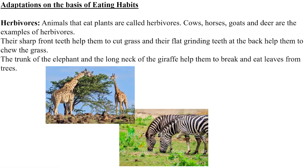The next adaptation is based on eating habits. Herbivorous animals have very sharp front teeth which help them cut parts of plants, and large flat back teeth — premolars and molars — which help them grind their food. Animals like the elephant have a long trunk, and the giraffe has a long neck, which help them reach leaves at the tops of trees.